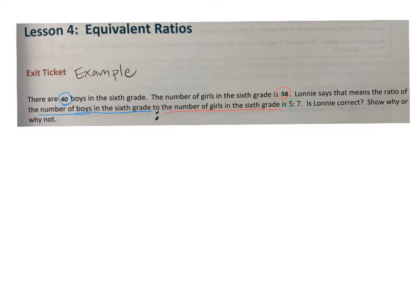And Lonnie is saying that that is equal to 5 to 7. Or what she's basically saying is that 40 to 58 is equal to 5 to 7. And we have to decide, is Lonnie correct? And then we need to show why or why she's not correct. And we can do that using pictures, drawings, numbers.